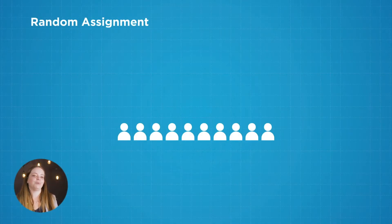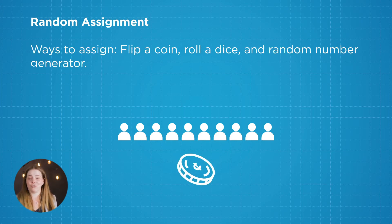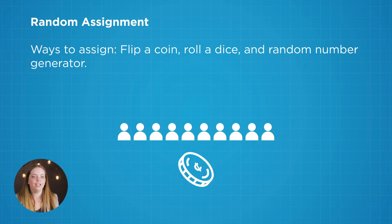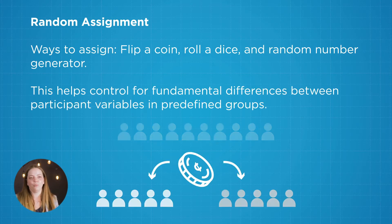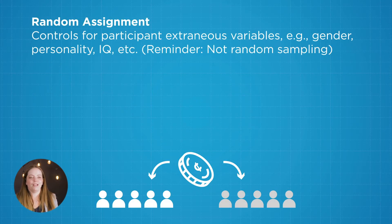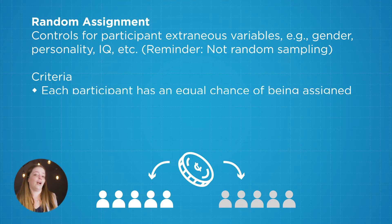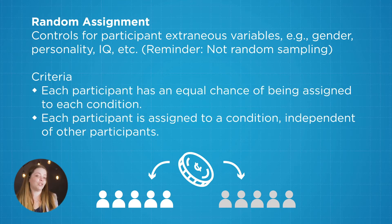So instead we use random assignment — a randomized method such as flipping a coin, rolling a die, or using a random number generator to assign people to groups. This way there's roughly the same amount of variability in both groups in terms of their preference for the drinks, IQ, socioeconomic status, or anything else that might affect their memory.